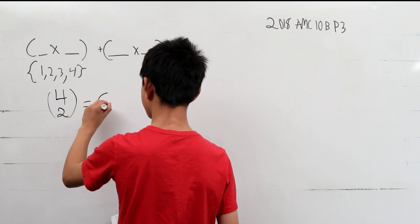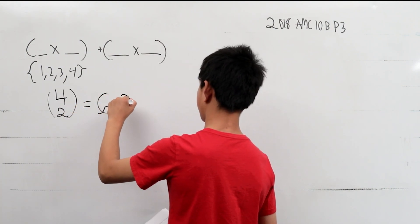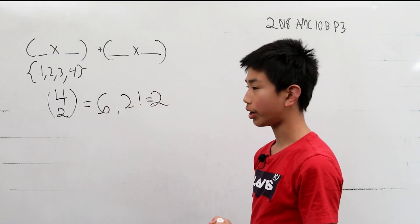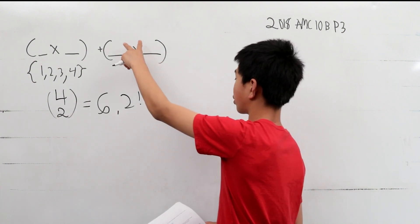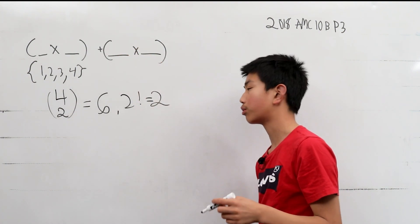So this is going to be 6 and we have to divide it by 2 factorial or 2 because that's the number of ways to arrange 2 terms in a 2 sequence thing. So,